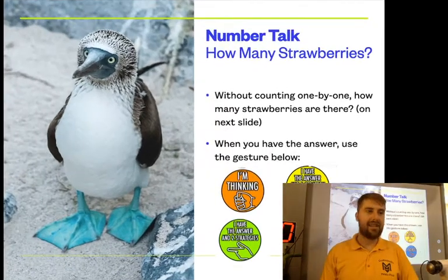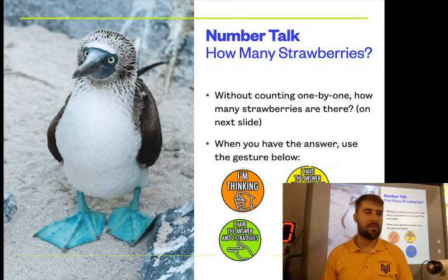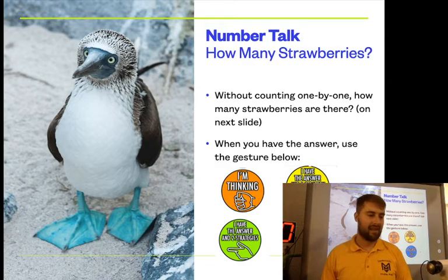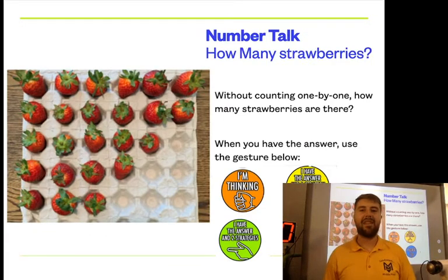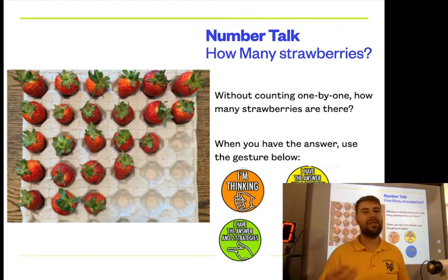So we are going to dive into our number talk for today. Without counting these strawberries one by one, try and figure out how many strawberries there are. They'll be on the next slide. And I would challenge you to find two or three different strategies to figure out how many strawberries there are. So here are our strawberries. Take a look. Try and figure out how many there are. And then if you're willing to, share your method in a comment or discussion post so other people can see your thinking as well. Pause the video here. Once you have two to three different methods, jump back in and I'll share one of mine with you.